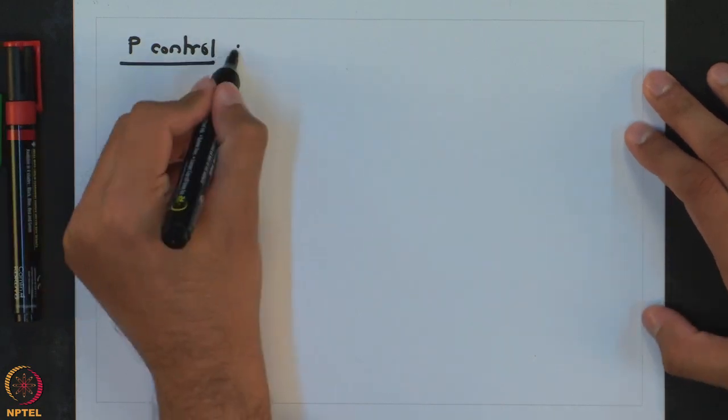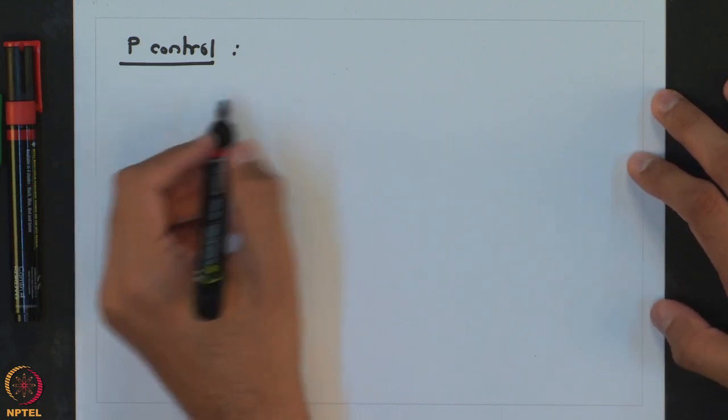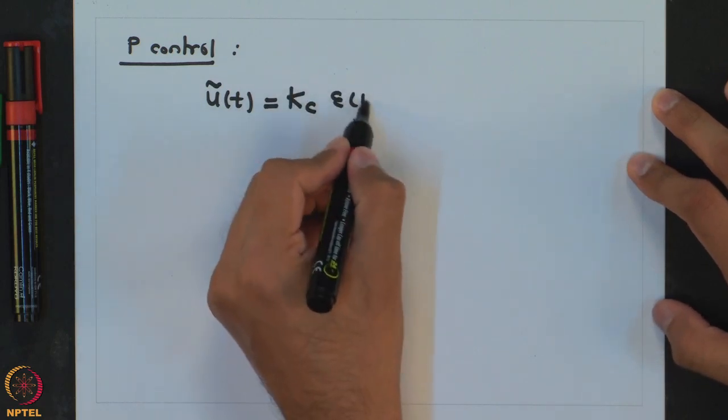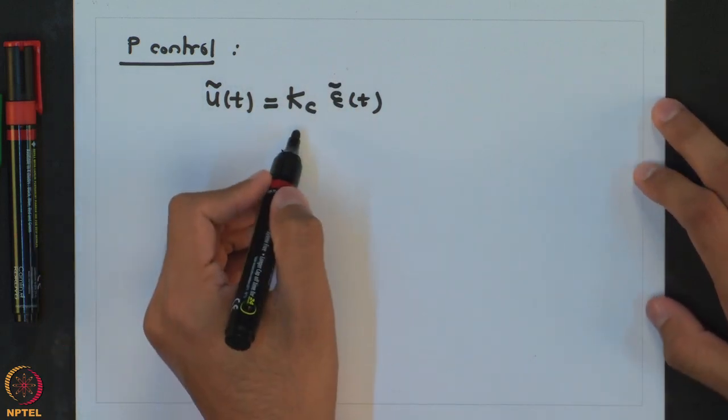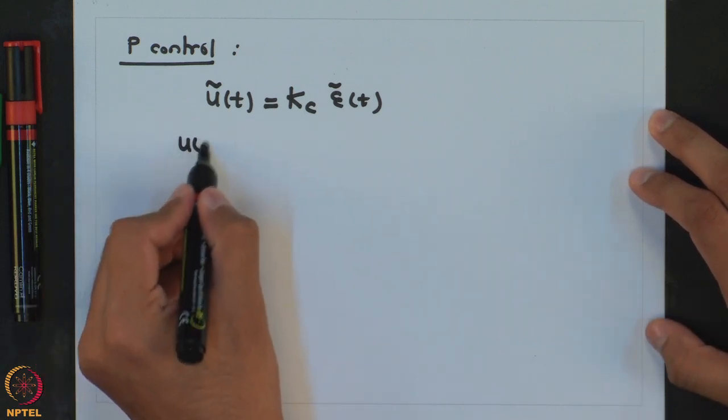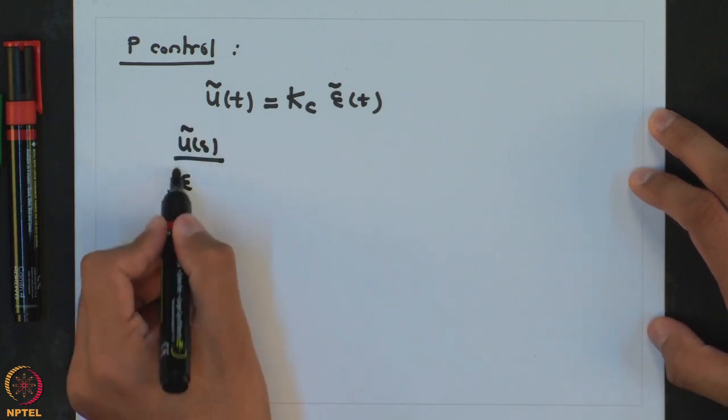We will now see how implementation of a proportional controller is going to help us in terms of disturbance rejection or set point tracking. For the proportional controller, the controller output is proportional to the current error, and the proportionality constant — the controller gain — is the parameter of the controller. In the Laplace domain, the transfer function for this controller is simply Kc. Let us look at what values are permissible for Kc depending on the action of the controller.